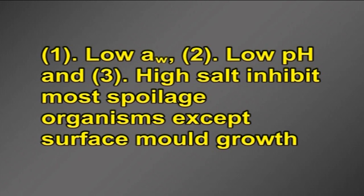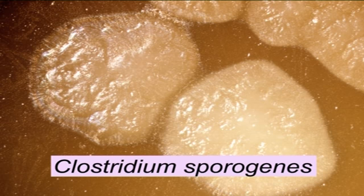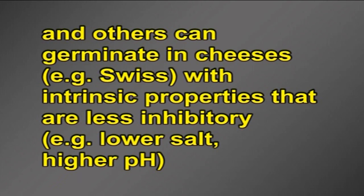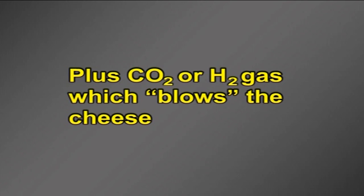Ripened cheeses: low water activity, low pH and high salt inhibit most spoilage organisms except surface mold growth. Spores of Clostridium butyricum, Clostridium sporogenes and others can germinate in cheeses with less inhibitory intrinsic properties — for example Swiss cheese with lower salt and higher pH. These organisms may metabolize citrate, lactose, pyruvate or lactic acid and produce butyrate or acetate plus carbon dioxide or hydrogen gas, which blows the cheese.